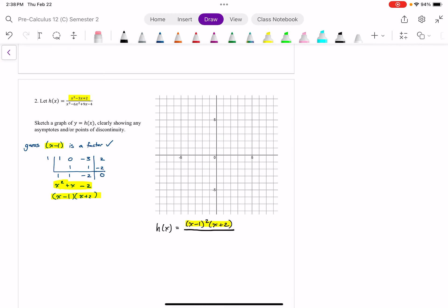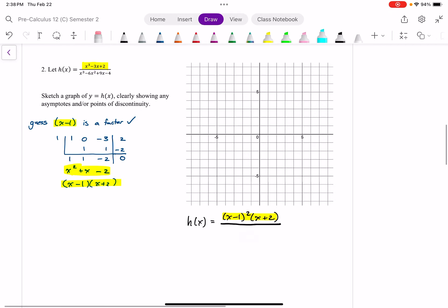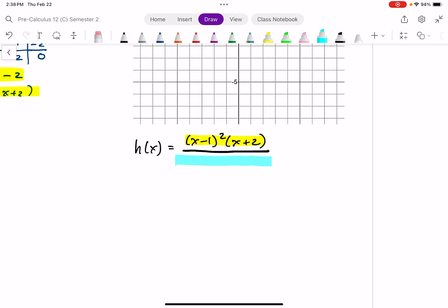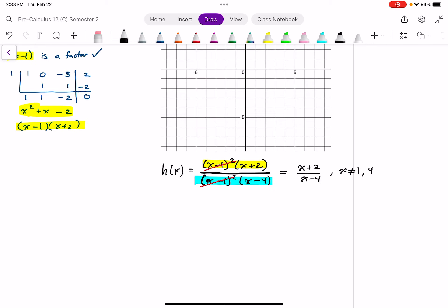All right, I do need to do the same thing for my denominator. Which is no harder. It's no easier. It's roughly the same amount of work. I don't think you need to watch me do all the steps. If you factor that properly, you should get a factor of x minus 1 twice and a factor of x minus 4. All right. Which means I can see this simplifies down to just x plus 2 over x minus 4. But I still have a restriction where x cannot equal 1, and x cannot equal 4.